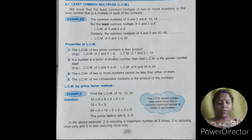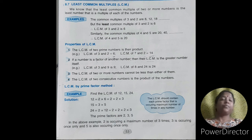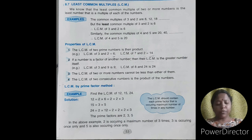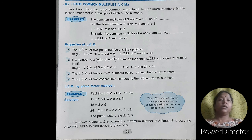Next property: the LCM of 2 or more numbers cannot be less than either of them. LCM cannot be less than the numbers whose LCM is to be calculated. It is quite natural — how can a multiple be less than the number? Next property: the LCM of 2 consecutive numbers is the product of those numbers.